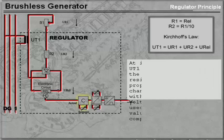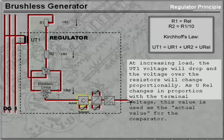At increasing load, the UT1 voltage will drop, and the voltage over the resistors will change proportionally. As U REL changes in proportion with the terminal voltage, this value is used as the actual value for the comparator.